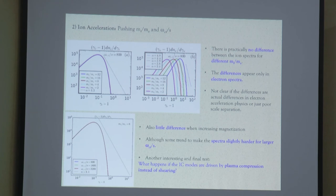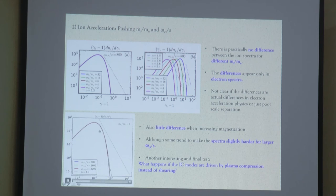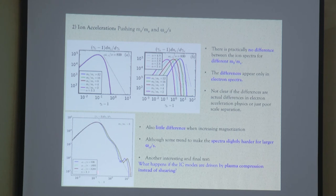In terms of magnetization, we tested simulations with mass ratio of 8 and different values of omega_CI over S from 800 to 3,200. We see something very similar to the electron case: the final spectrum doesn't change much, but as we increase the magnetization, the spectrum gets a little bit harder. This is great news because this value is very large in reality, so we at least want to see that as we increase it, the acceleration persists and even becomes a little more efficient.